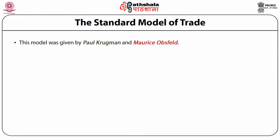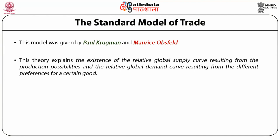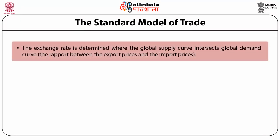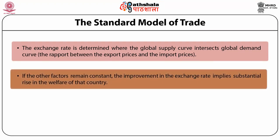The standard model of trade was given by Paul Krugman and Morris. This theory explains the existence of a relative global supply curve resulting from production possibilities and a relative global demand curve resulting from different preferences for a certain good. The exchange rate is determined where the global supply curve intersects the global demand curve. The ratio between export prices and import prices — the terms of trade — if other factors remain constant, an improvement in the terms of trade implies a substantial rise in the welfare of that country.